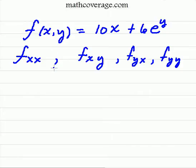Okay, once again, we've got four parts to this problem here, taking partial derivatives. We have f of x, y equals 10x plus 6 times e to the y.